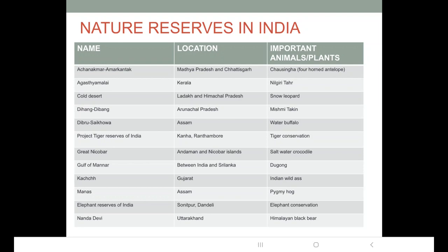Elephant reserves of India: Project Elephant was launched in 1992 to conserve elephant corridors. Some famous elephant reserves are in Sonitpur and Tandeli, where the main target is elephant conservation. Then Nanda Devi nature reserve is located in Uttarakhand, and the Himalayan black bear is an important animal here. There are many nature reserves in India; these were a few important ones along with the animals associated with them.